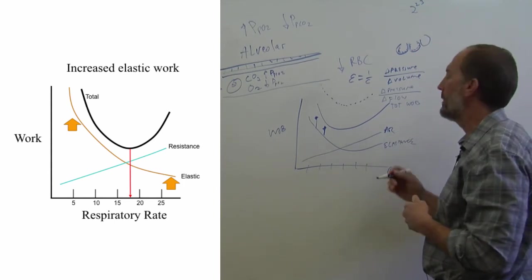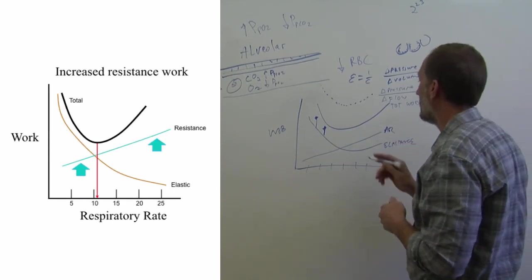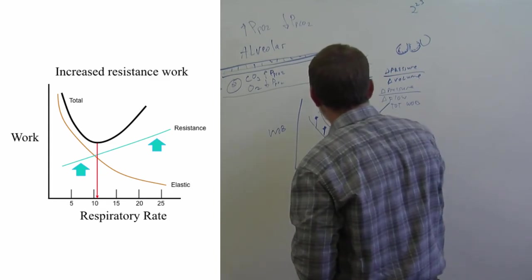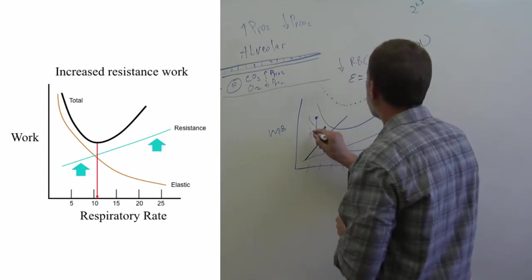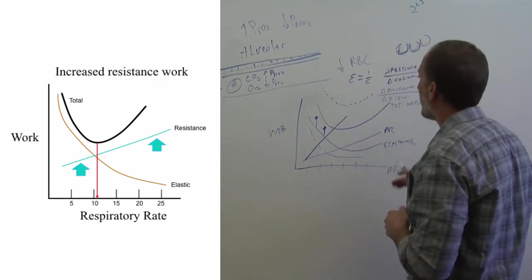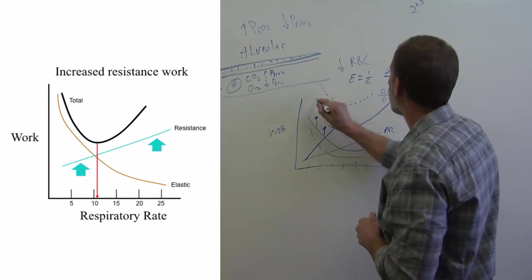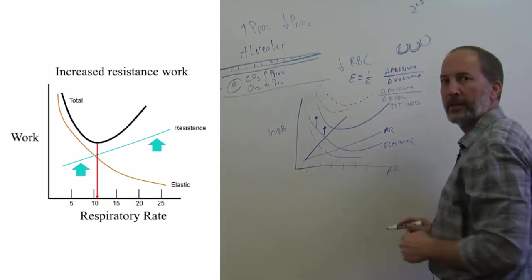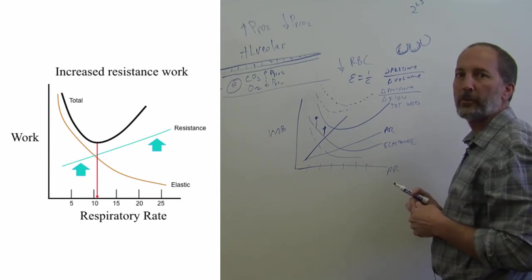And the converse is true. If someone has, say, asthma or emphysema, where there's an airways resistance problem, then their airways resistance is very high. Their elastance tends to be lower. And so their work of breathing is going to be the lowest early in the lower respiratory rates.